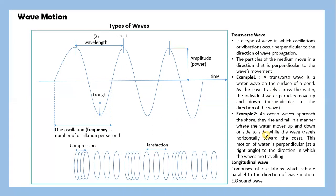Example 2 is an ocean. An ocean wave approaches the shore. It rises and falls in a manner where the water moves up and down or side to side while the wave travels horizontally towards the coast. This motion of water is perpendicular at the right angle to the direction in which the waves are traveling.